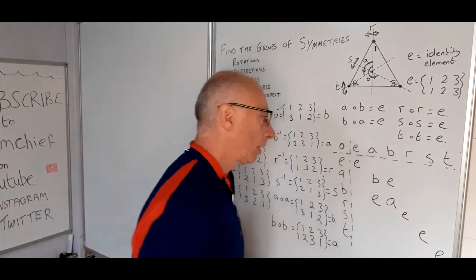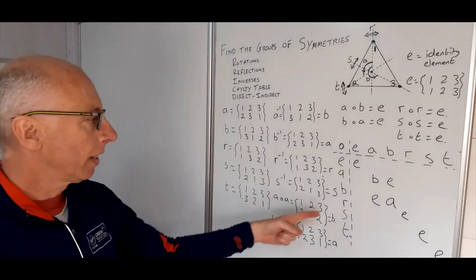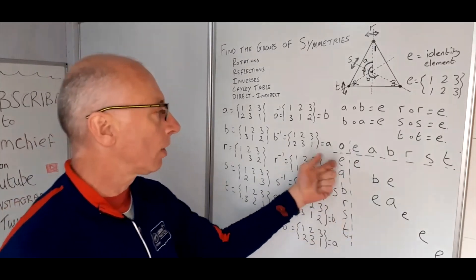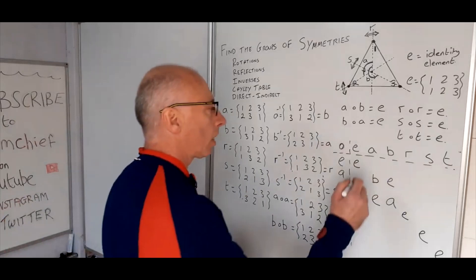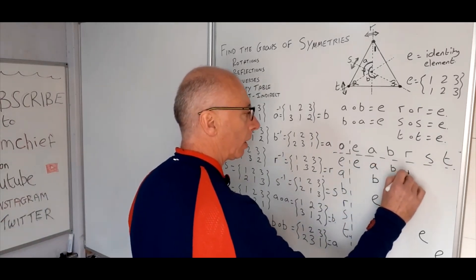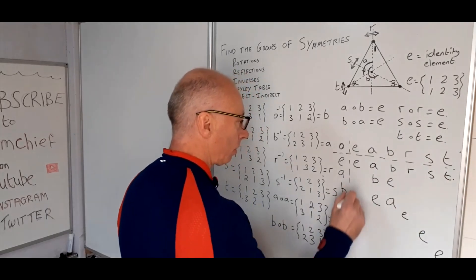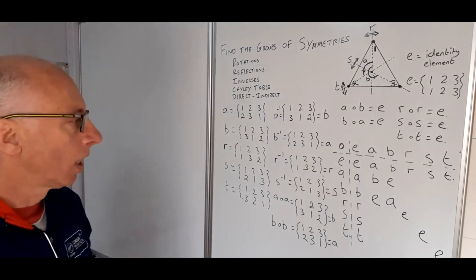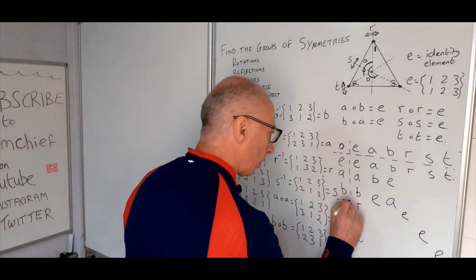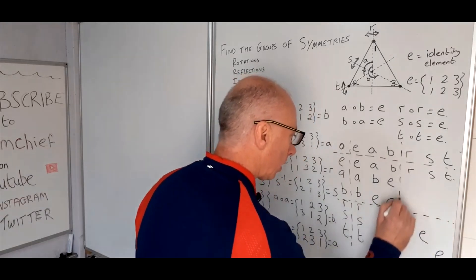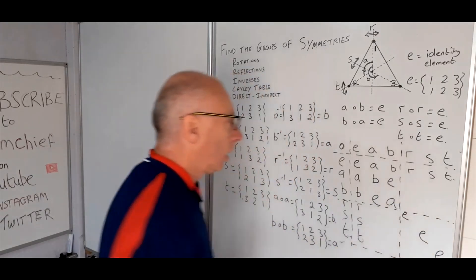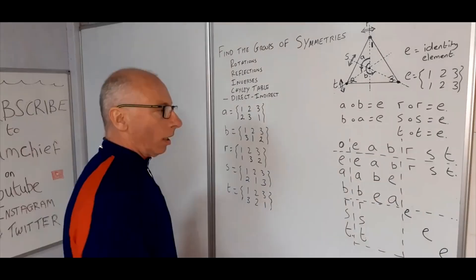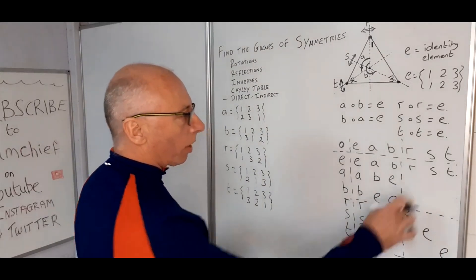The outer rows and columns acted with the identity just repeat the column and row headers: A, B, R, S, T. We can also draw a dividing line to separate the rotations from the reflections in the table. Now let's work on some of the remaining parts of the table.